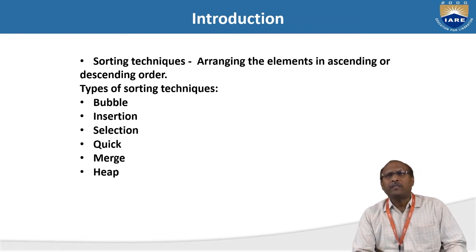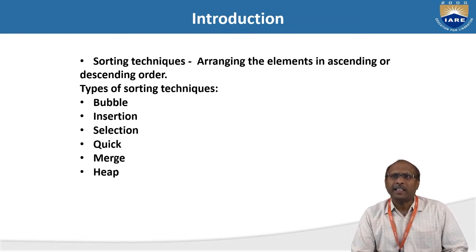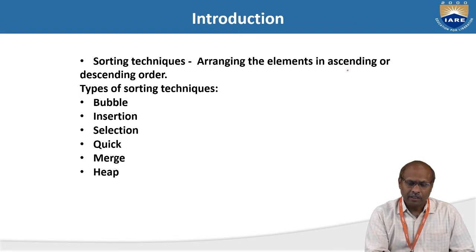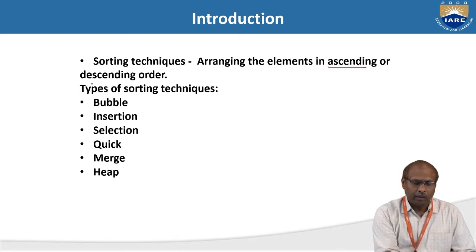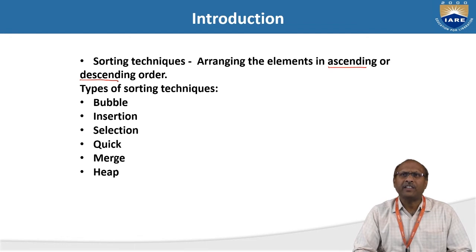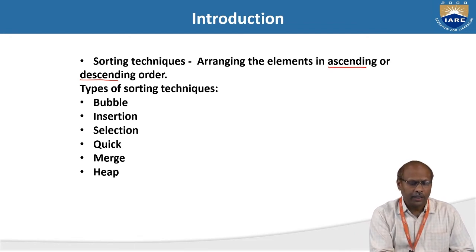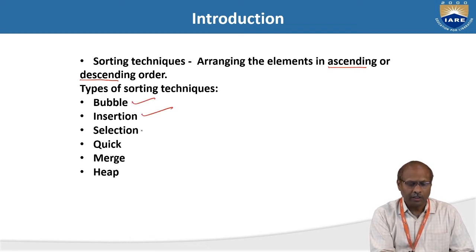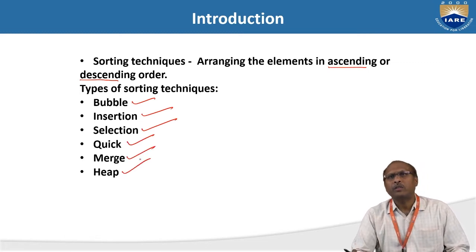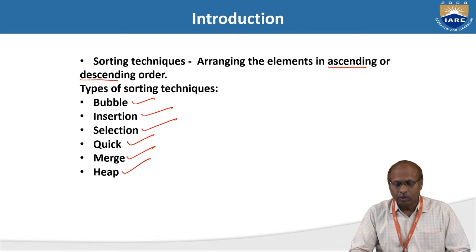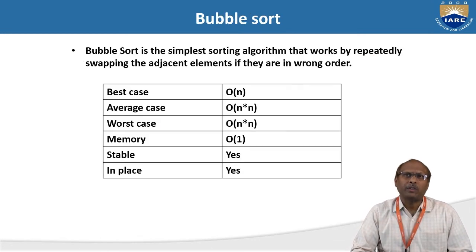Using sorting, you can arrange the elements in either ascending or descending order. There are two types of ordering: either ascending or descending. You can sort the data using any of the following sorting techniques like Bubble Sort, Insertion Sort, Selection Sort, Quick Sort, Merge Sort, or Heap Sort. Today we will discuss about Bubble Sort.